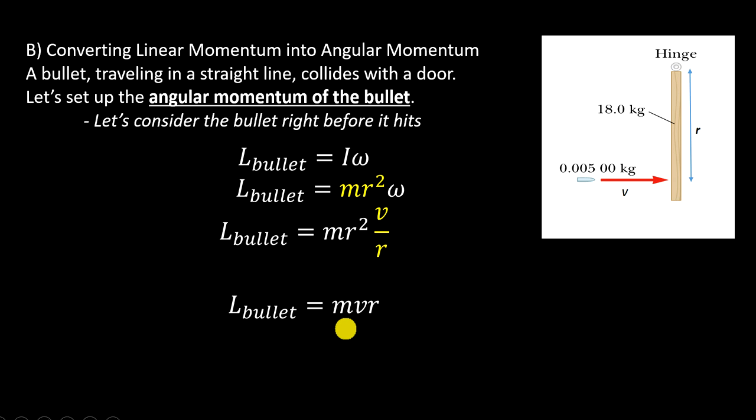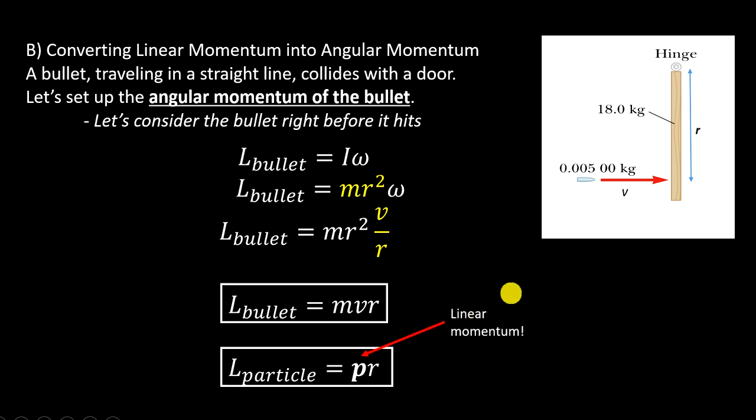Well, this is interesting. I have m times v. What's m times v? Oh, that's right. That's the linear momentum of the particle. So, really, the angular momentum of the bullet, or any single mass point object, is just its linear momentum. That's easy. That's mv times r, the distance from that axis.